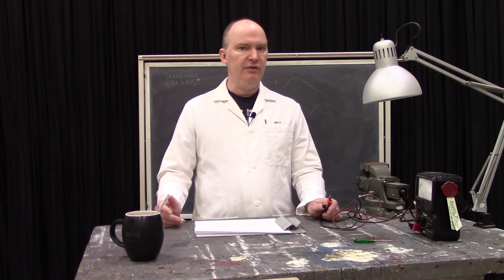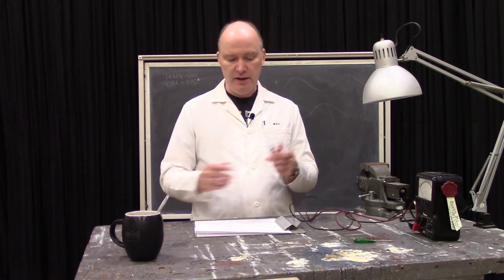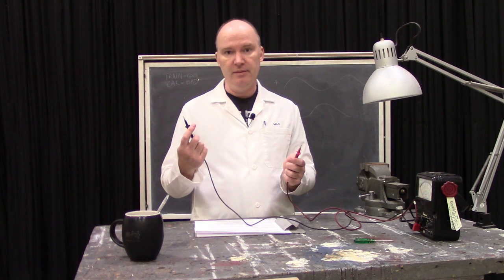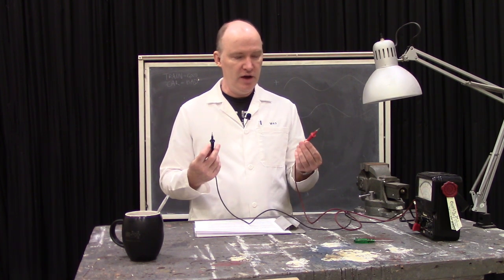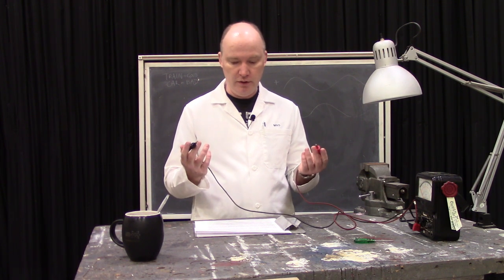Measuring voltage is like measuring distance. You need two points to measure between. It's why your meter has two probes on it. You use one of them to define something as zero volts and then you measure the voltage, the electrical pressure between the two probes.